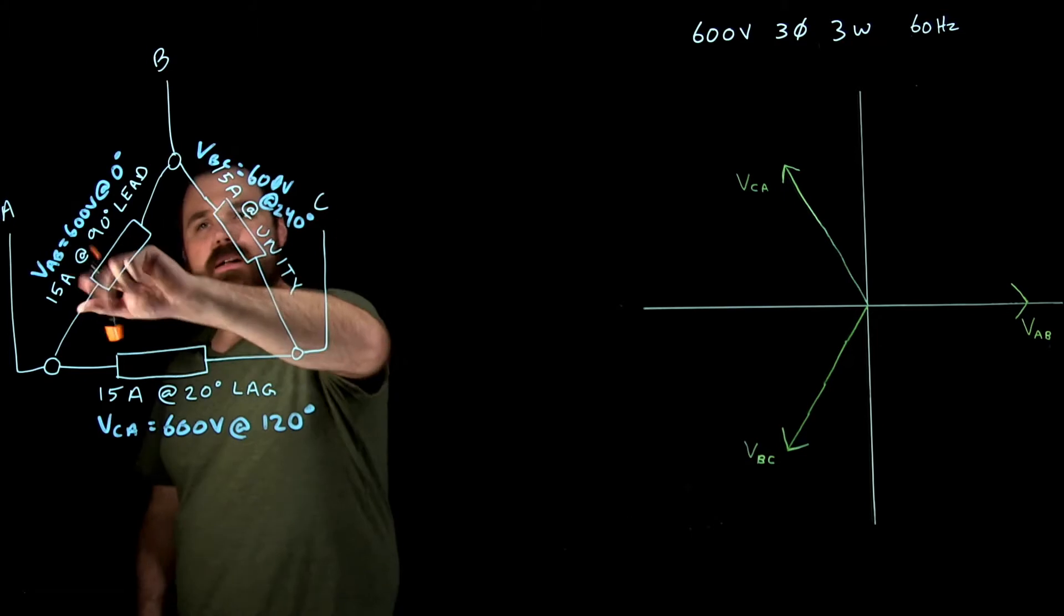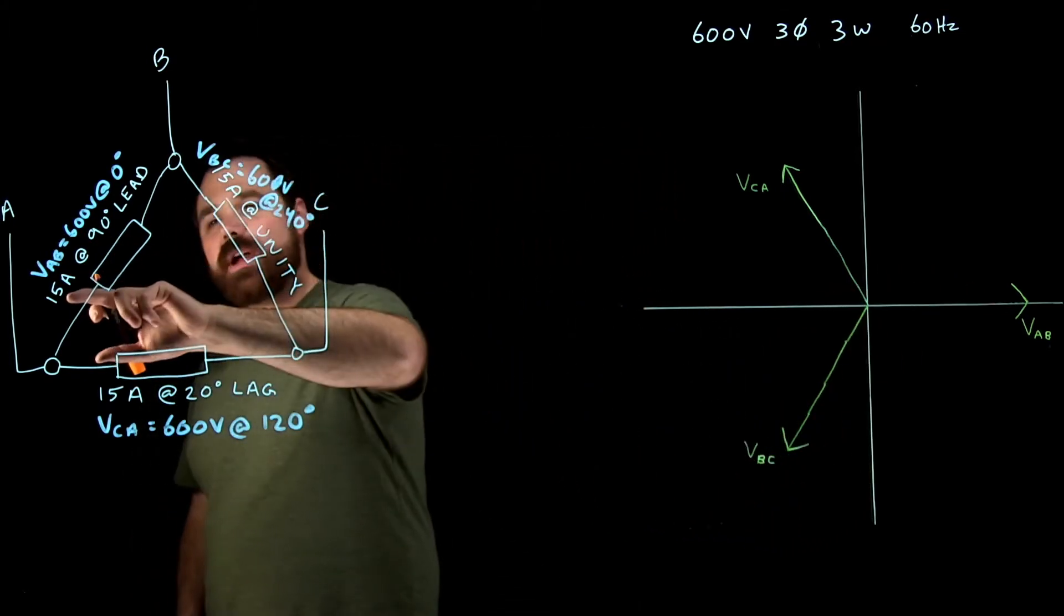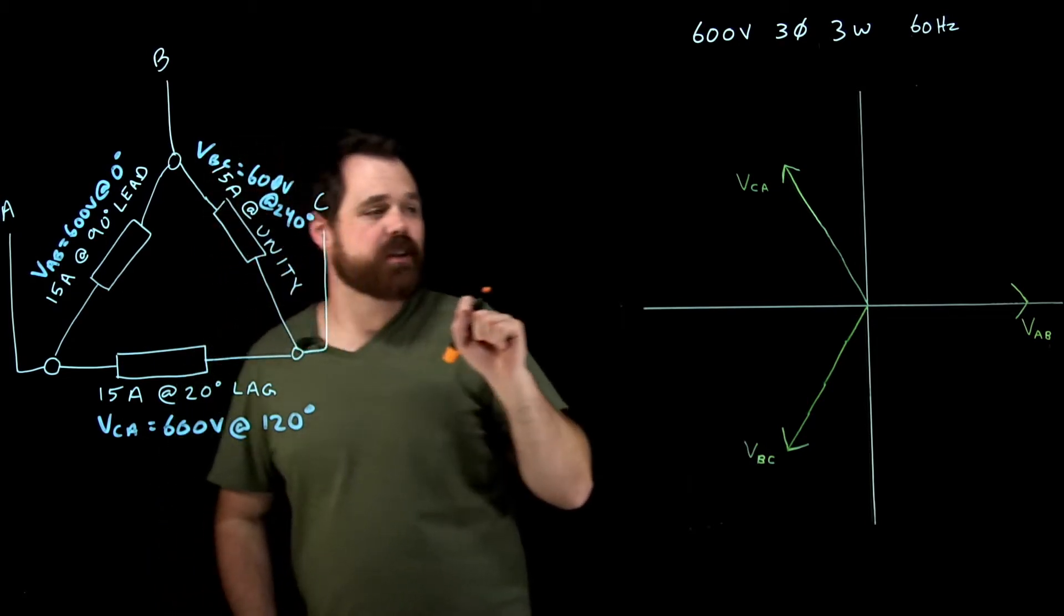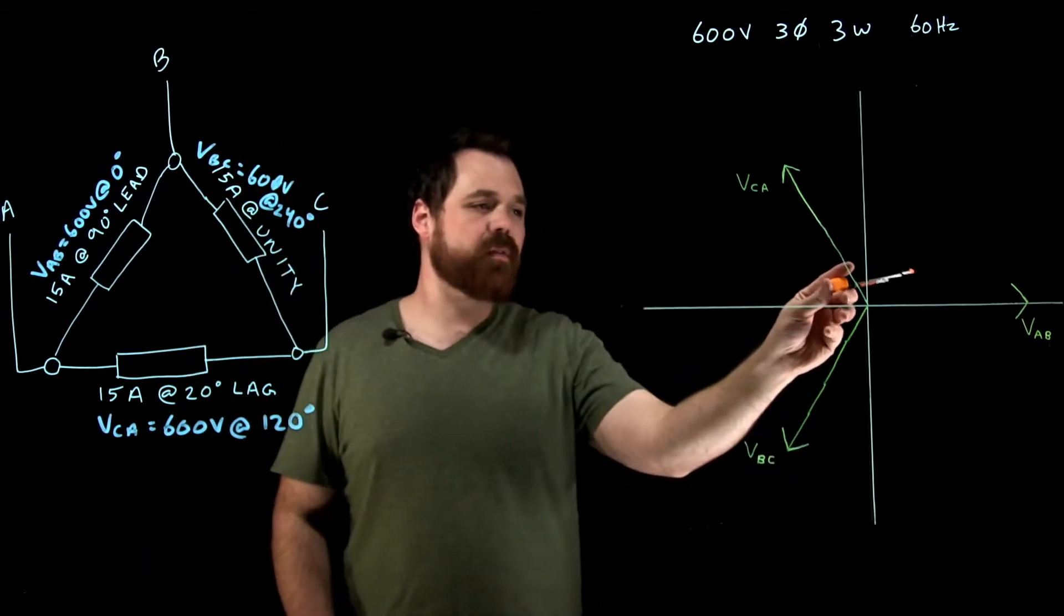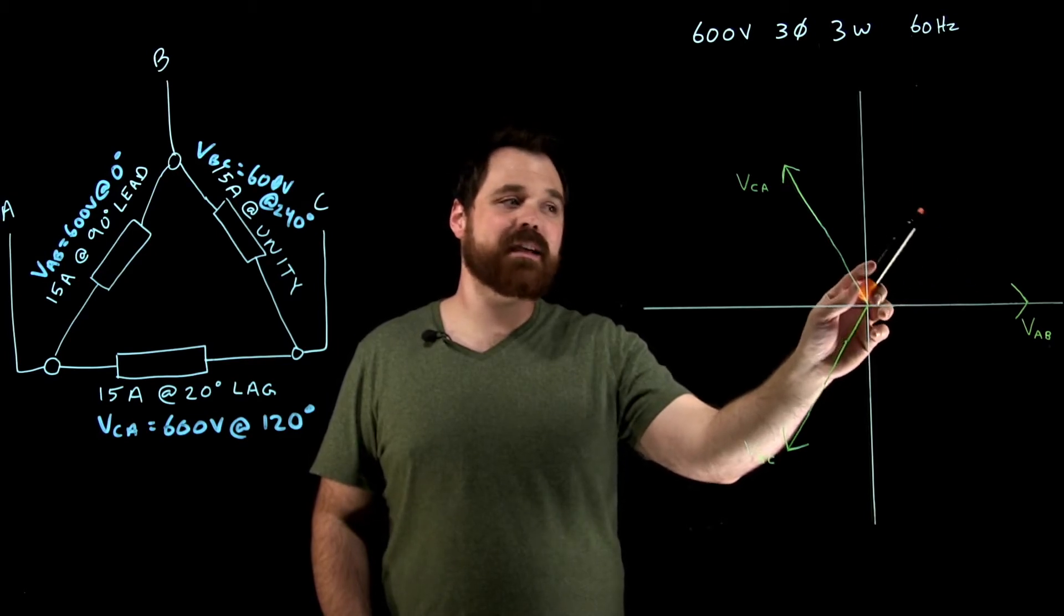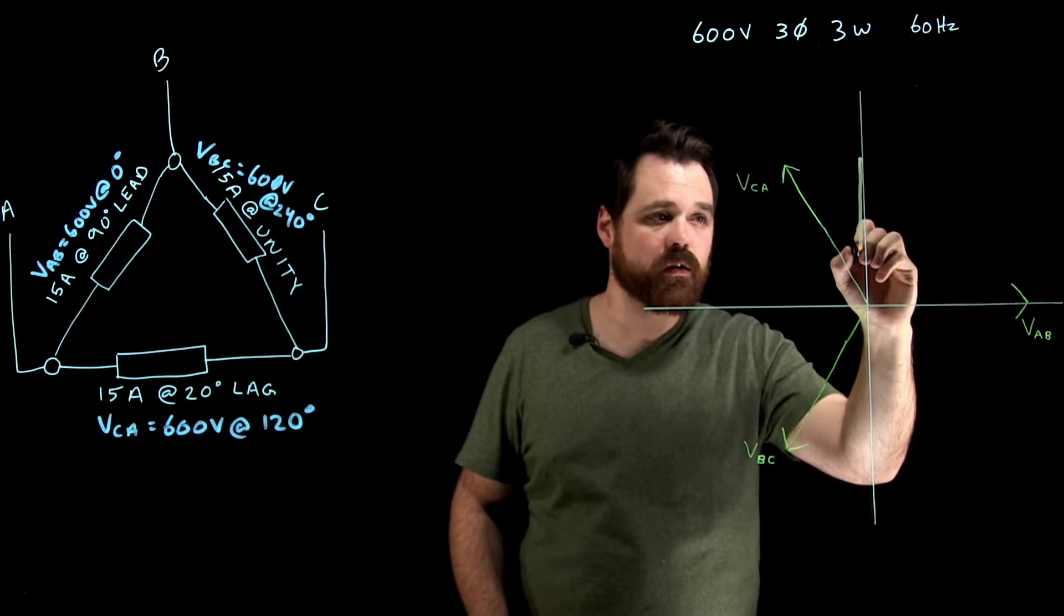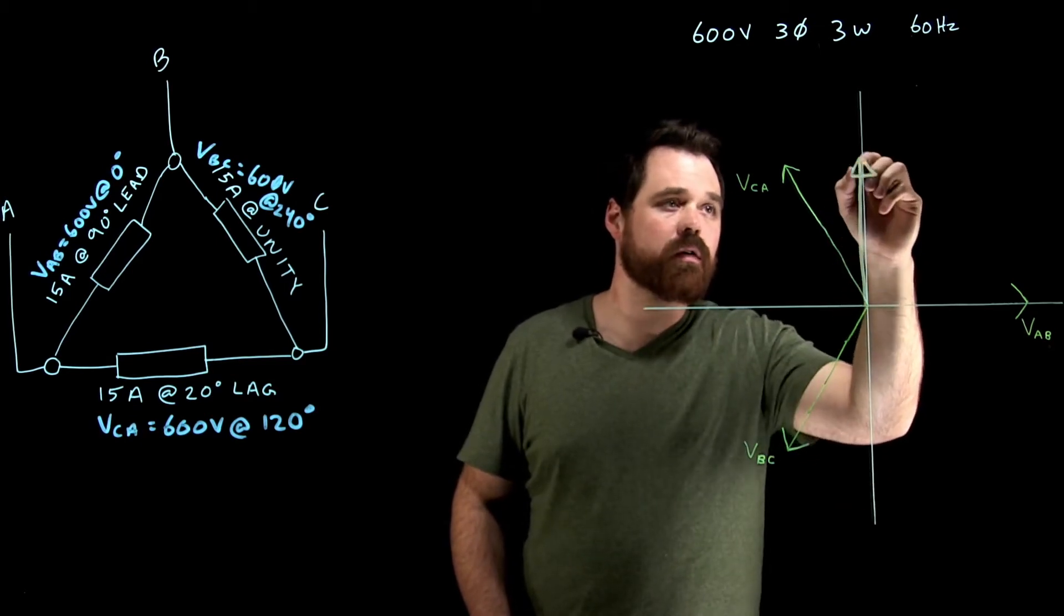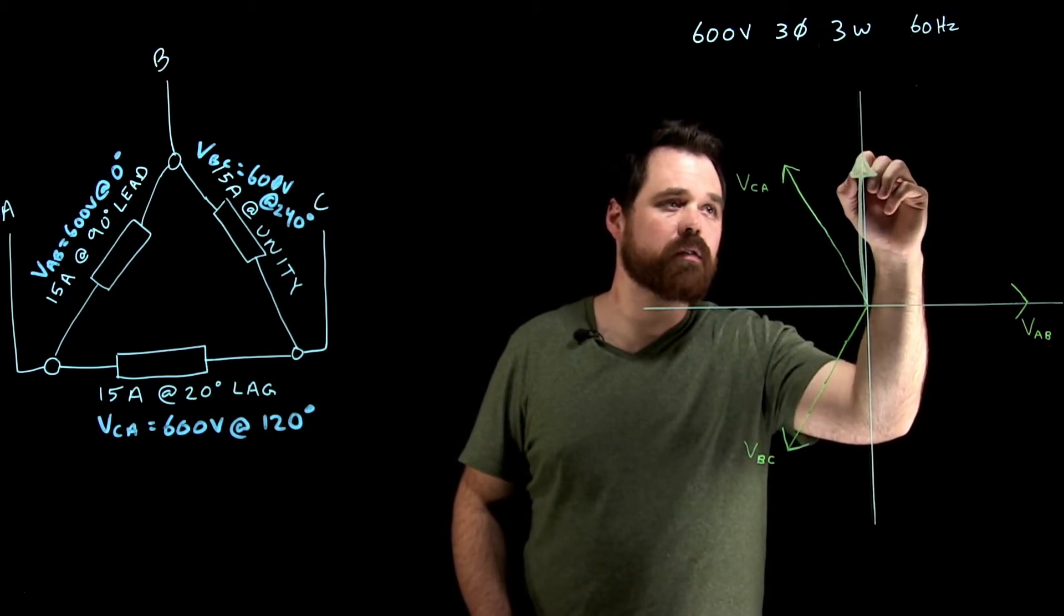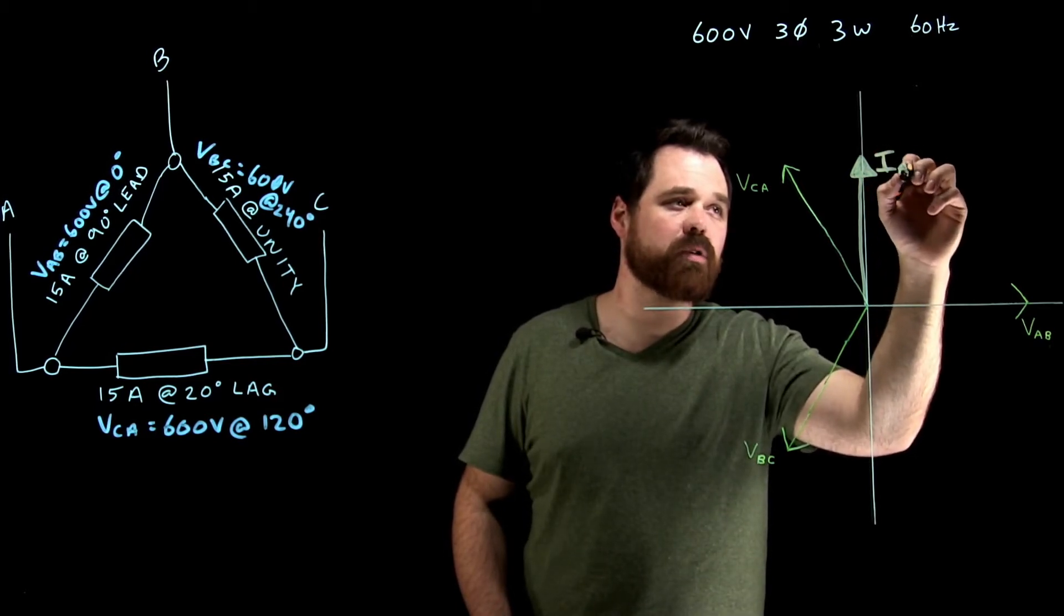So let's start with phase A. So phase A, my voltage is here at zero degrees. I'm told I have 15 amps at a 90 degree lead, which means that if my voltage is here, my current is leading by 90, which is actually going to put my current up here.